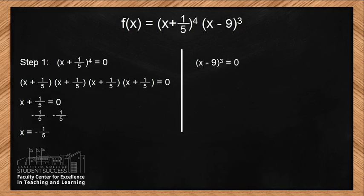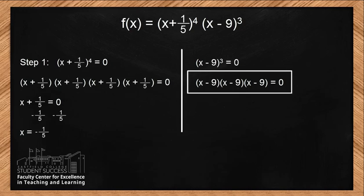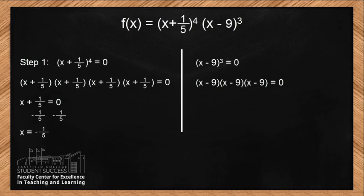Now attacking the next equation: x minus 9 to the power of 3 equals zero. We can rewrite this as x minus 9 times x minus 9 times x minus 9 equals zero. By similar fashion, we take one factor, x minus 9, set it equal to zero, and x equals 9. So we found another zero: x equals 9.